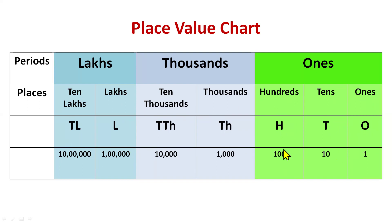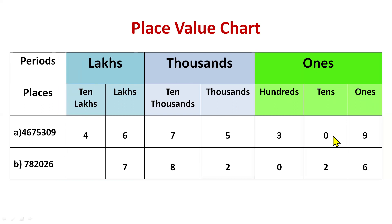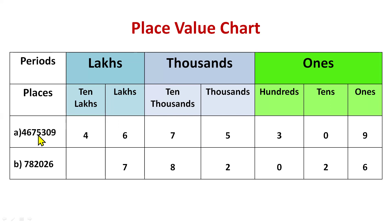Now let's take an example. We'll write the given number under the place value chart. The number is four six seven five three zero nine. Always start writing digits from the right side of the number — not from four, always from the right. So that is nine. Write nine under ones place, then zero under tens, then three under hundreds, five under thousands, seven under ten thousands, six under lakhs and four under ten lakhs.